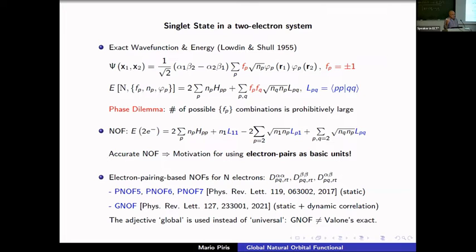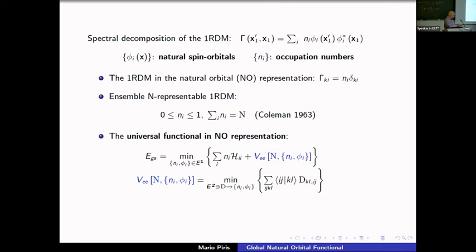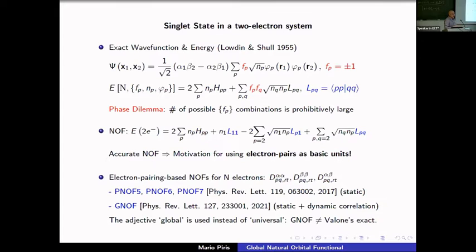For the natural orbital functional for two electrons, we discovered that in the weak-correlation regime — close to Hartree-Fock — all phases can be taken as negative except for the one corresponding to the highest occupation number, which is positive. Interestingly, this choice of fixed phases also works very well in the strong-correlation regime. For van der Waals interactions, however, papers show the phases must alternate, so the functional is strictly correct only for two-electron singlet systems.